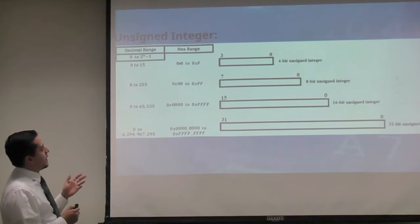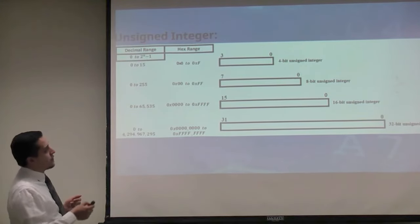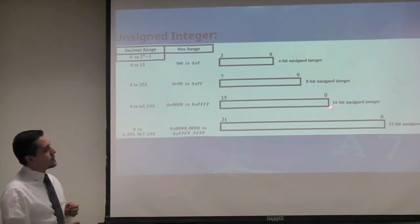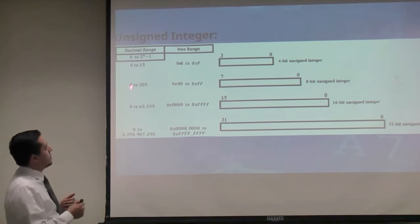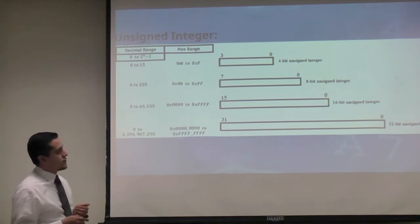For the unsigned, we have different sizes: 4, 8, 16, and 32, with the decimal and hexadecimal ranges shown.